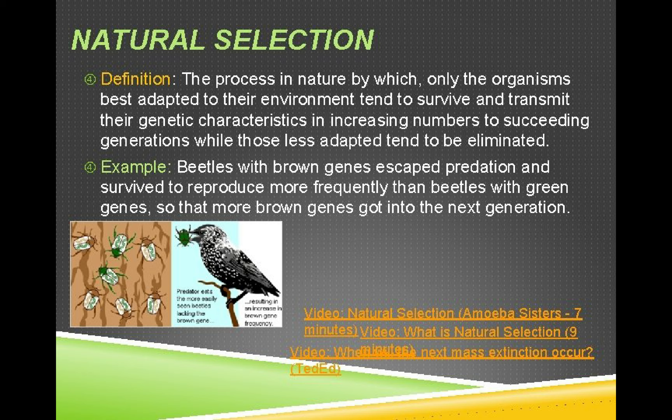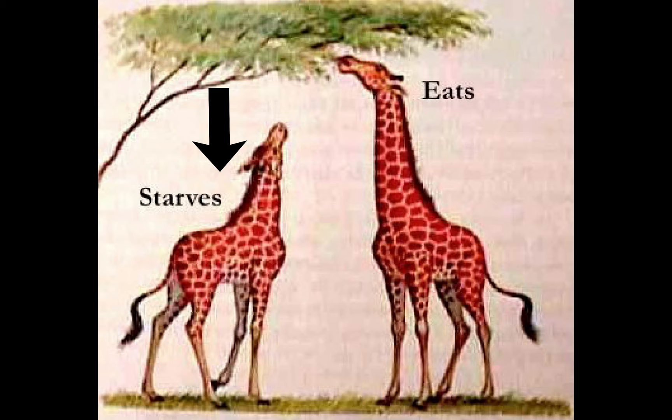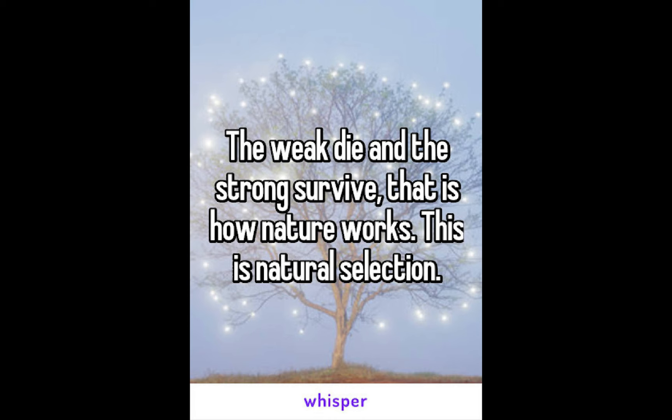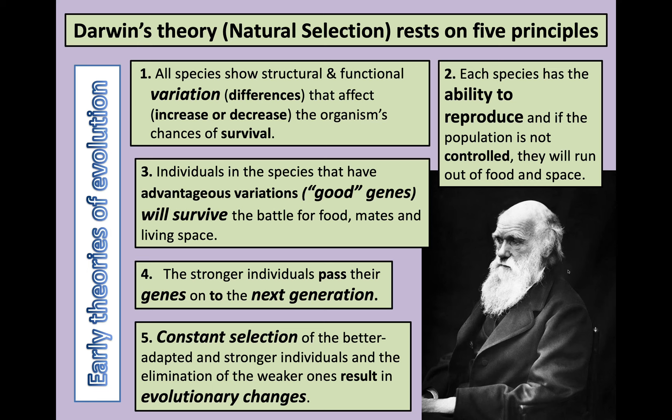Natural selection is brought about by genetic characteristics — genes on chromosomes — which help the animal to survive. If that animal survives, it produces offspring, and the offspring inherit the favorable genetic characteristics. The one with weak characteristics produces no offspring, and that weak genetic characteristic is lost. For example, a blind lion cub will never survive — the genetic material for blindness dies with it since it has no offspring.